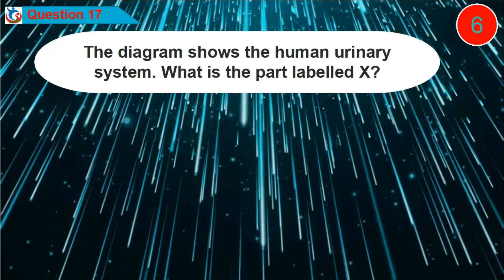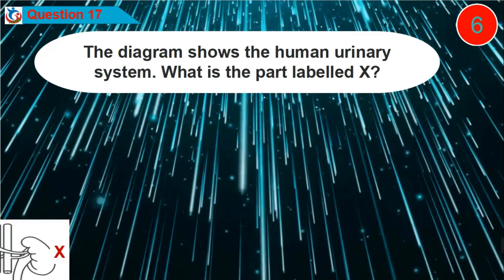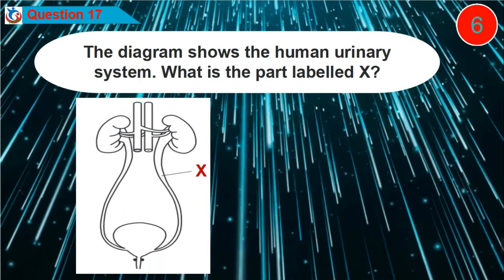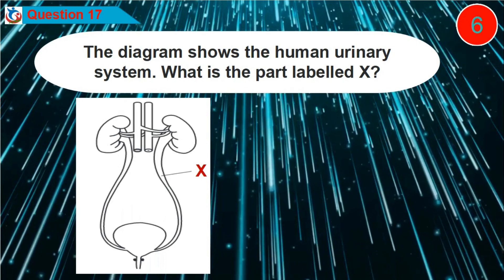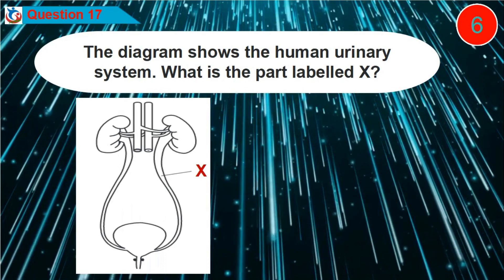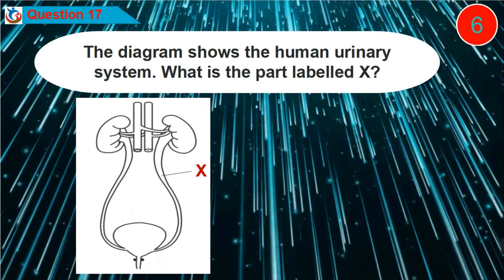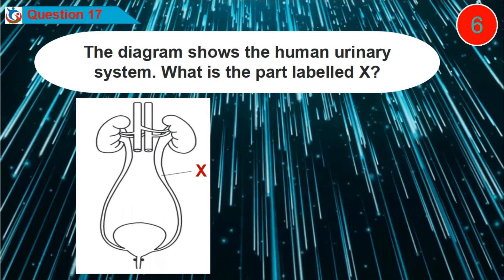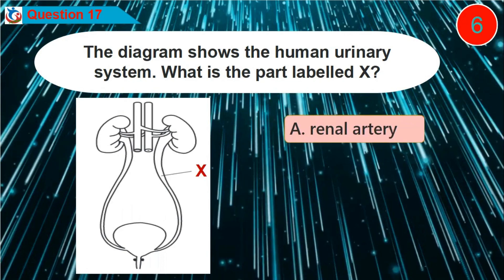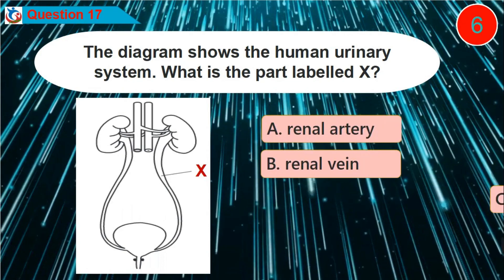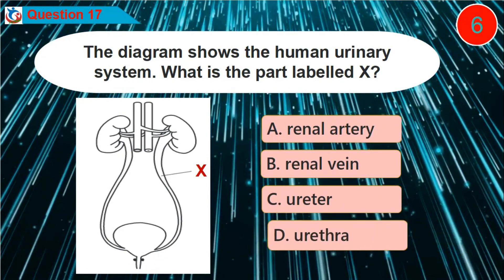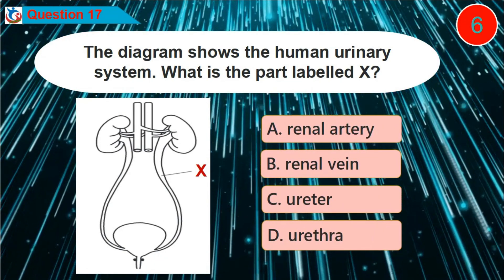Question 17. The diagram shows the human urinary system. What is the part labelled X? Is it option A, B, C, or D?